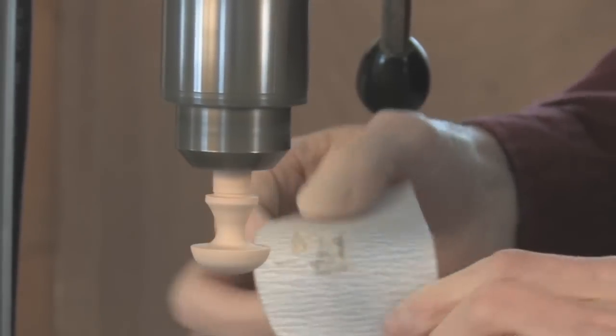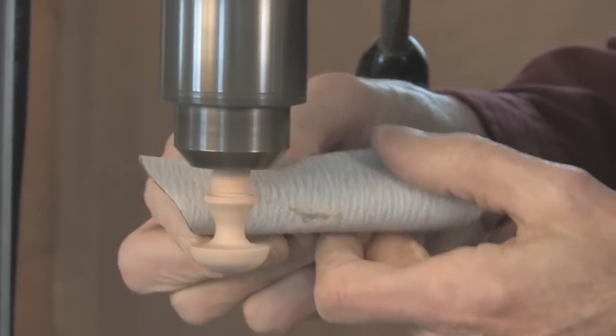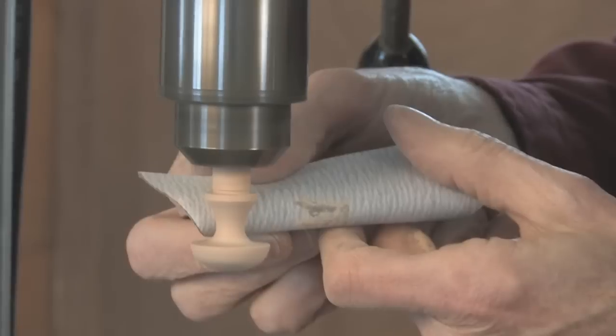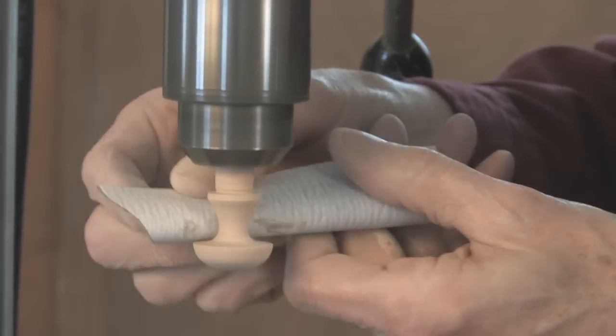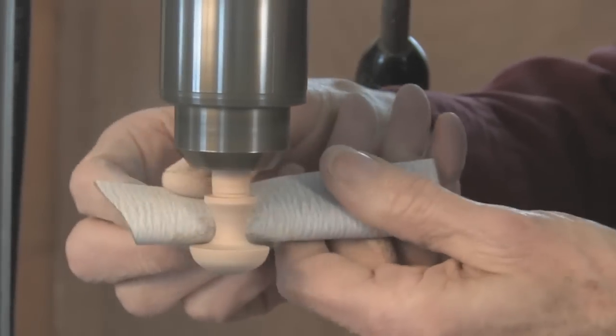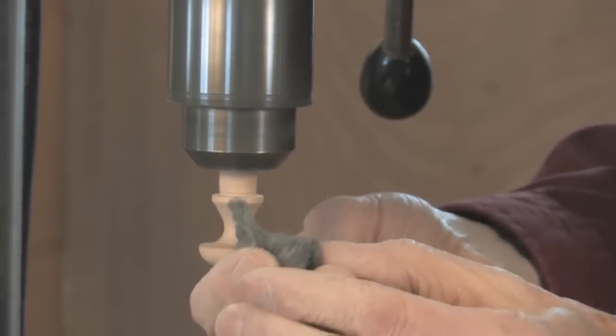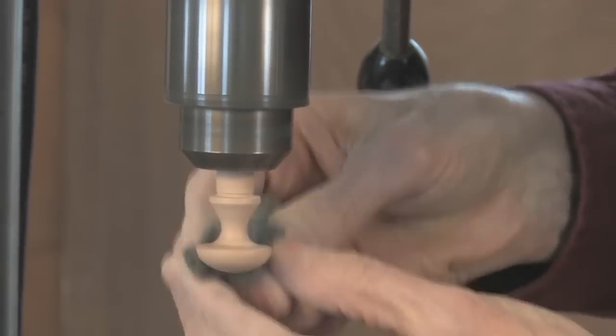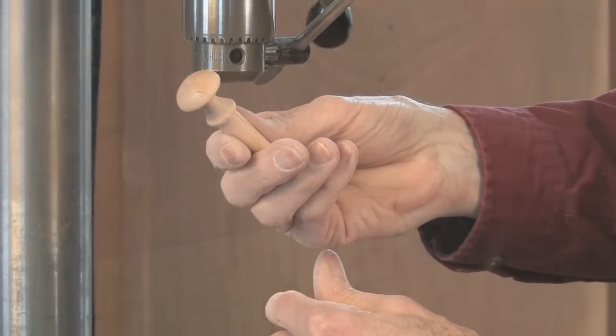And then I'll go to a 150 and really work the small diameter underneath the mushroom. Then I will progress to a 220, and then we'll go on to 320, and then finally a bit of steel wool to really put a polish on it.